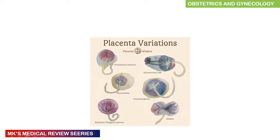Different placental variations include: a filamentous insertion where umbilical vessels arise from the membranes; a succenturiate lobe with an accessory lobe having blood vessels traversing the membranes; and other insertion types such as battledore or marginal insertion, circummarginate, circumvallate, and bilobed placenta. Keep these in mind as they may come up in OSCE stations where you may be asked to label them.